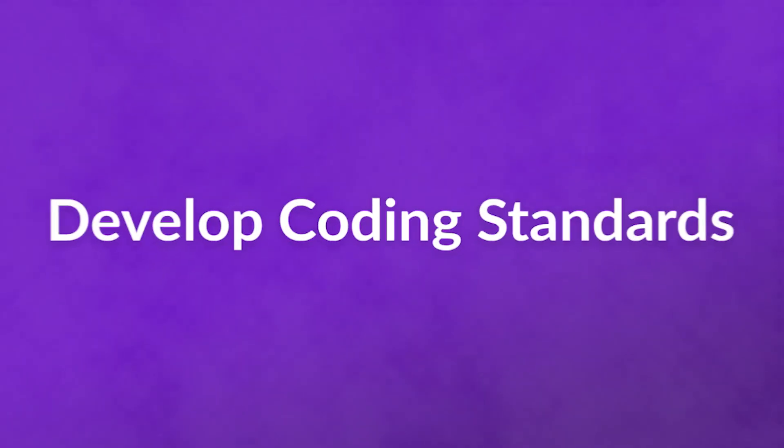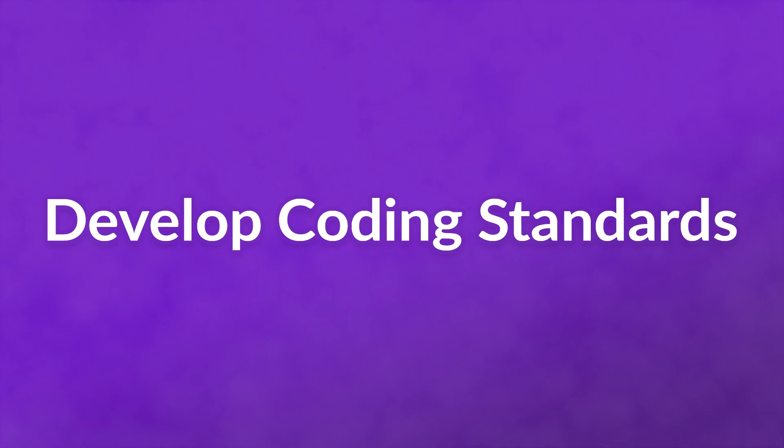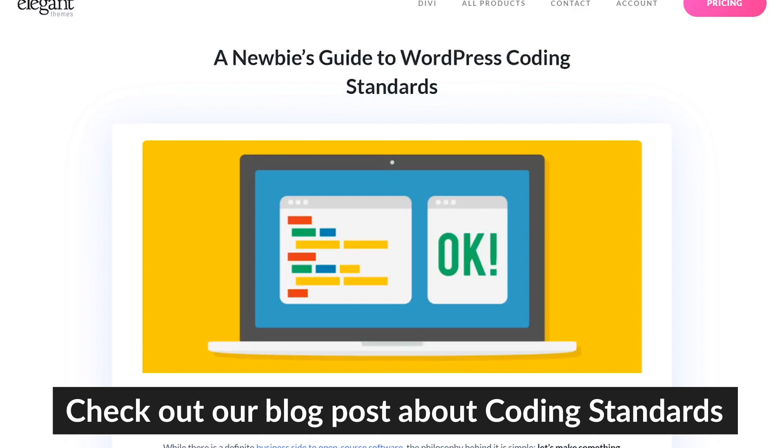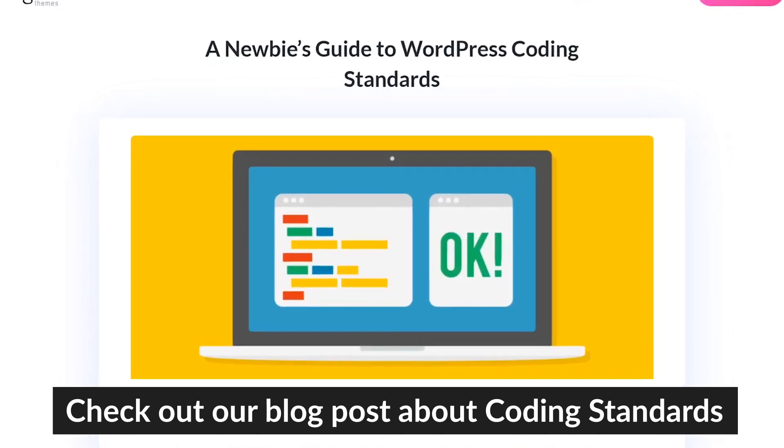Here are three best practices to follow. Number one: develop coding standards. Coding standards are what make projects like WordPress possible. Thousands of developers have worked on the core, but the WordPress coding standards have made it so that they're all working within the same guidelines. Coding standards are just rules you enforce so that errors are easy to find and fix.